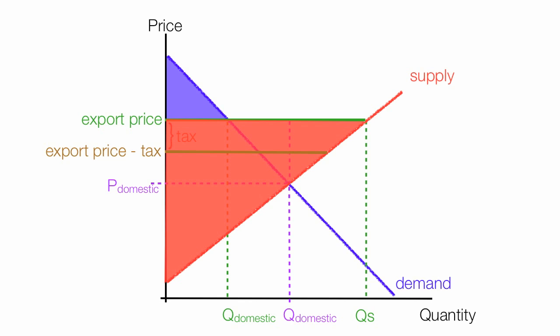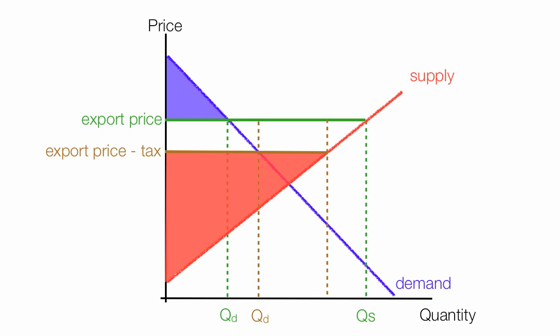If I fill in the consumer surplus after the tax, producer surplus falls. The black trapezoid is lost producer surplus. Quantity demand with the export price is that brown line, and quantity supplied is that brown line. The gain in consumer surplus is the blue trapezoid, tax revenues is the brown rectangle, and the two gray triangles are deadweight loss to society.